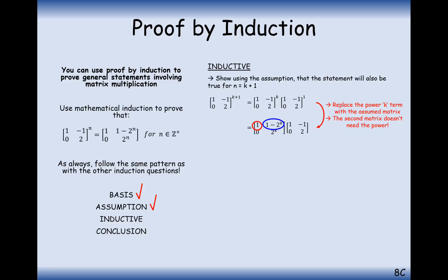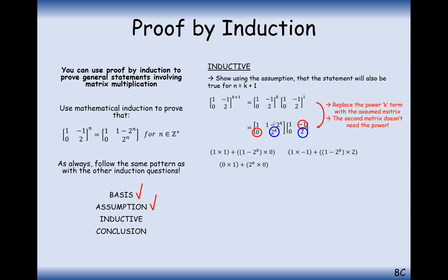Now all that's left is to multiply out these two matrices. Going along the row and down the columns: top-left is 1×1 + 0×(something), giving 1. Top-right is 1×(−1) + 2×(1 minus 2^k) — that cell will be a little fiddly to rearrange. Bottom-left is 0×1 + 2^k×0, which is always 0. Bottom-right is 0×(−1) + 2^k×2.